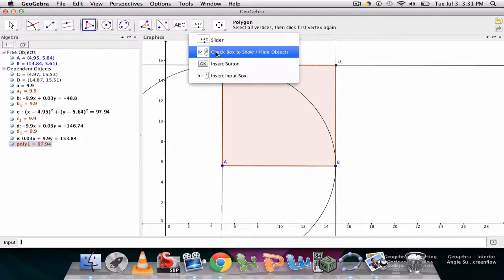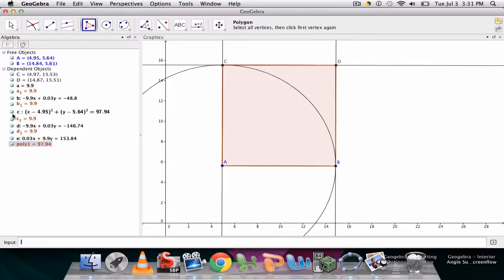Here you can have a checkbox to show or hide objects on the screen that's interactive. But over here I'm just going to hide the circle. We don't need that. We also don't need our perpendicular lines anymore either. So I'm going to get rid of those lines as well.